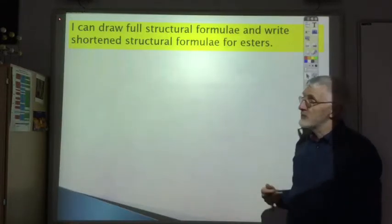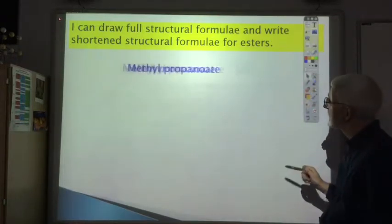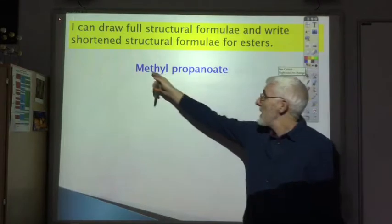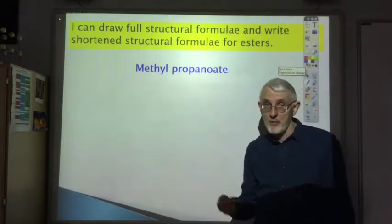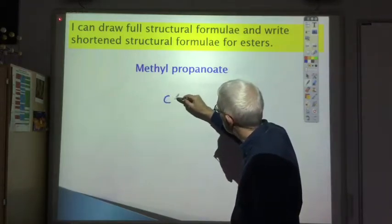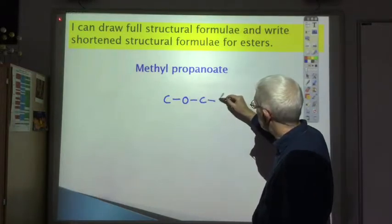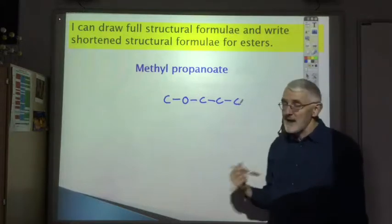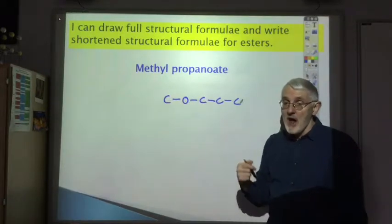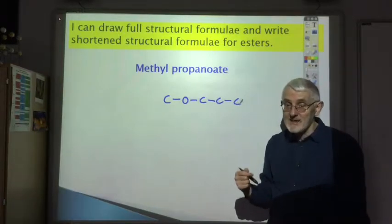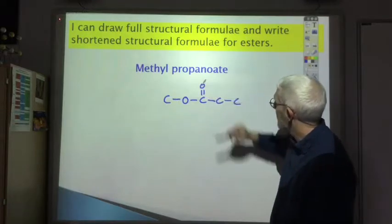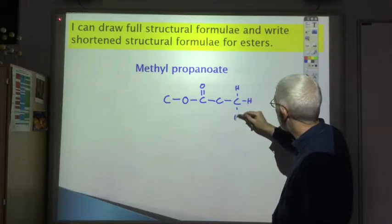You should be able to draw full structural formulas and write shortened structural formulas for esters. For methyl propanoate: 'methyl' comes from methanol (one carbon), 'propanoate' from propanoic acid (three carbons), with an oxygen in between. Start with one carbon from the methanol, then the oxygen, then the three carbons from the propanoic acid. Because it's an ester, there's a C=O on one side of the oxygen — since it came from the carboxylic acid, it goes on the propanoate side. Then add all the hydrogens to give every carbon four bonds.